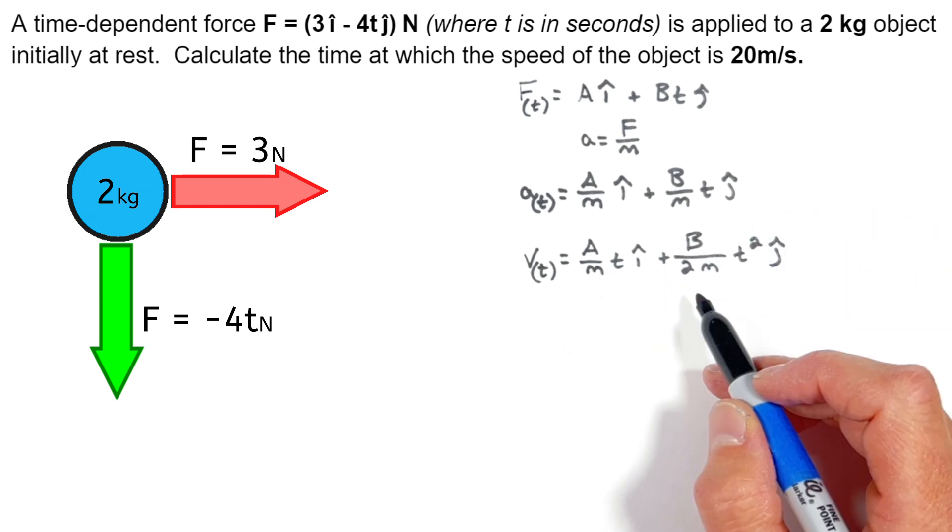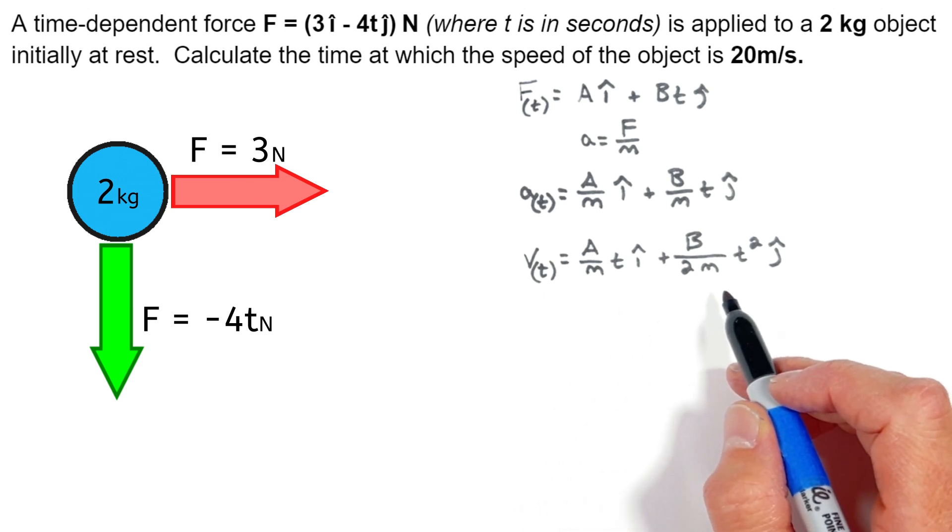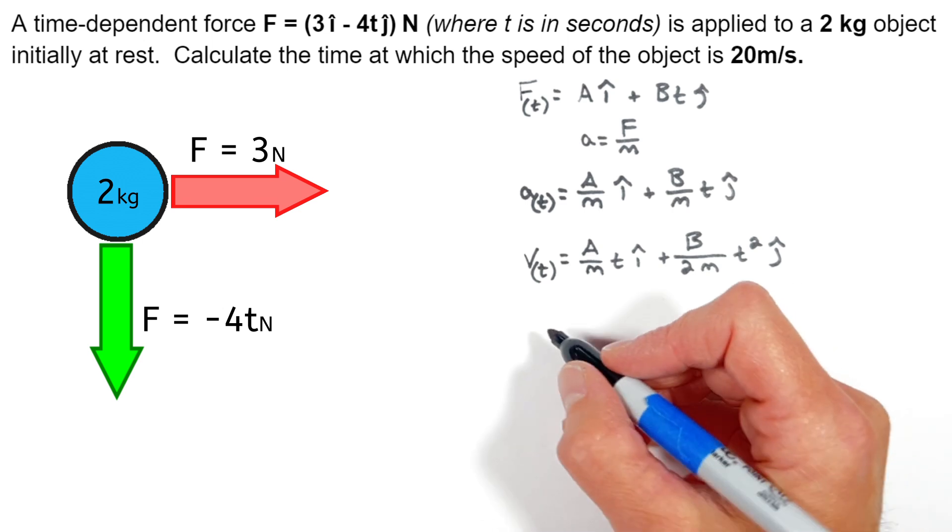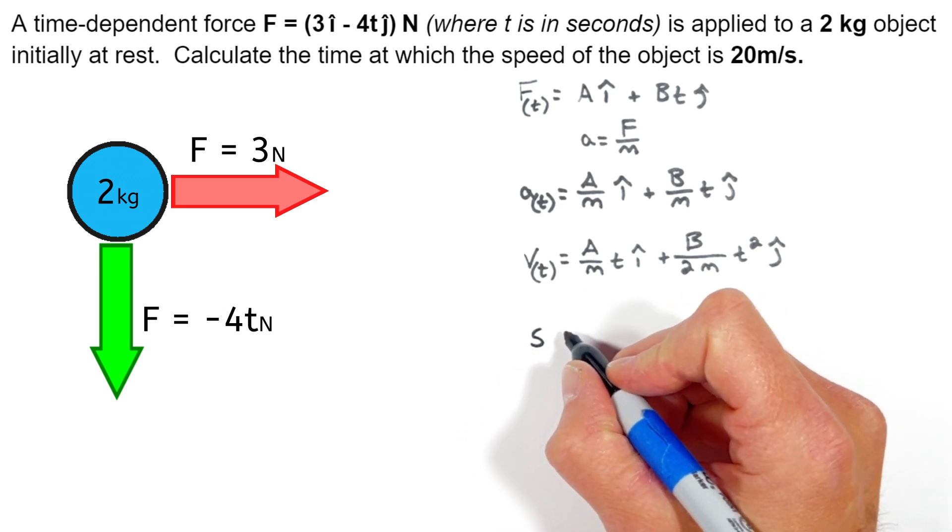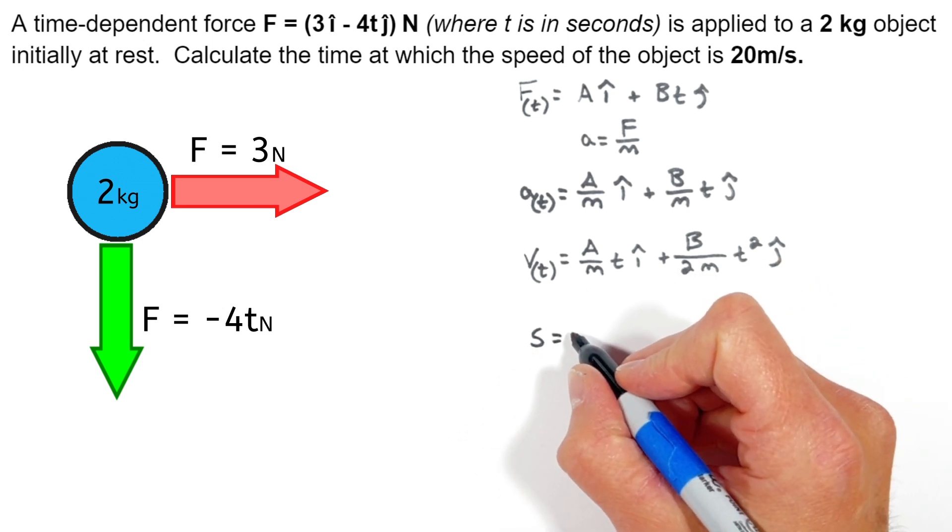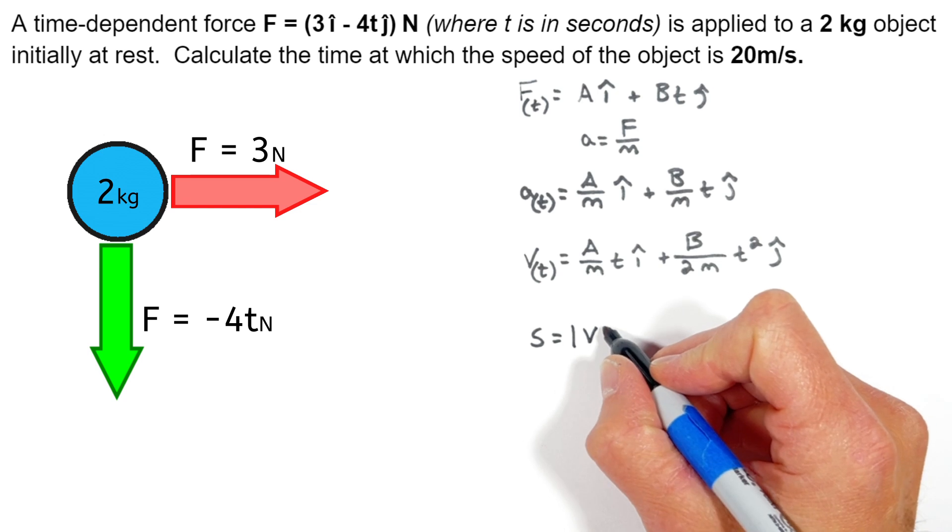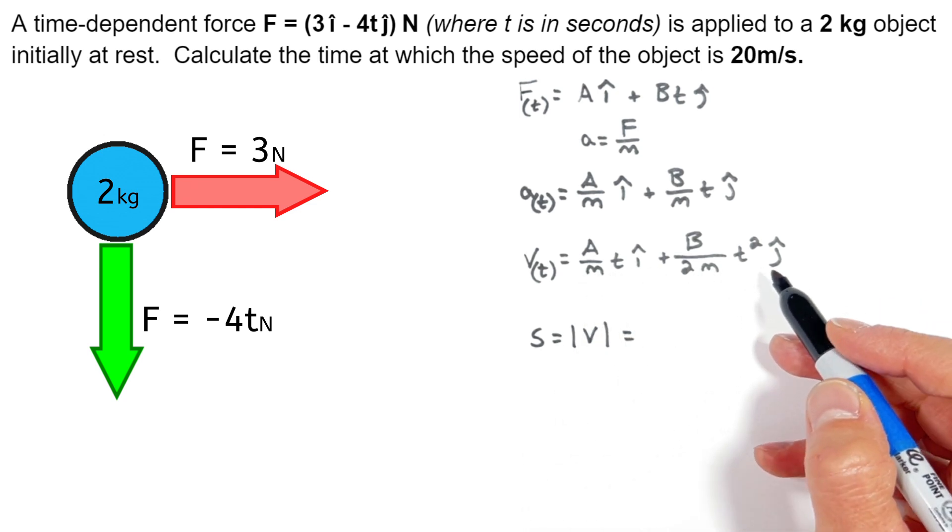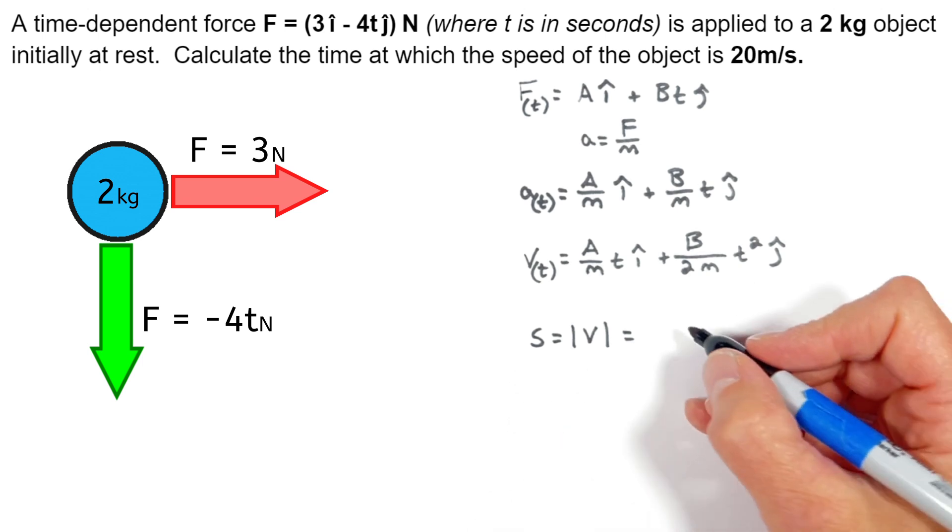Now realize this function gives us the components of the velocity of our object as a function of time, but it's not giving us the actual speed. In order to solve for the actual speed of our object, remembering speed is the magnitude of velocity, we're going to take these components of velocity and we're going to use the Pythagorean theorem to solve for the speed.